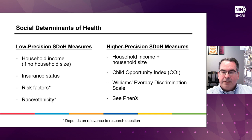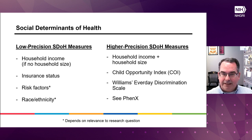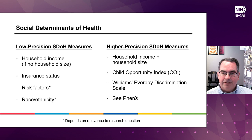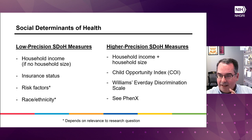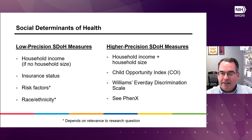I want to talk about low-precision versus higher-precision social determinants of health, because it's really important to think about when legacy datasets are useful. An example of a low-precision SDOH would be household income without household size — depending on the number of people in the household, the same income could mean very different things in terms of living above or below the poverty level. Insurance status is frequently used as a stand-in for socioeconomic status but is a very poor proxy. We also often look at social determinants of health and they actually function as risk factors rather than actual determinants of health. And race and ethnicity are socially constructed variables that function in a low-precision way when looking at social determinants of health.